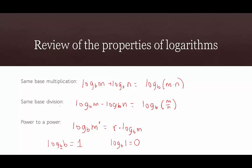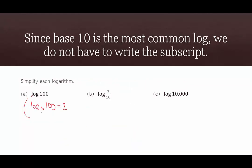Using the power to a power property and the identity, we can rewrite the argument as a power of the base. So log base 10 of 100 becomes log base 10 of 10 to the second power. Power to a power says if the argument has an exponent, we write it as the coefficient in front: 2 times log base 10 of 10. Log base 10 of 10 is the identity — it equals 1 — so we get 2 times 1, which equals 2. The goal is to rewrite the argument so its base matches the base of the logarithm.